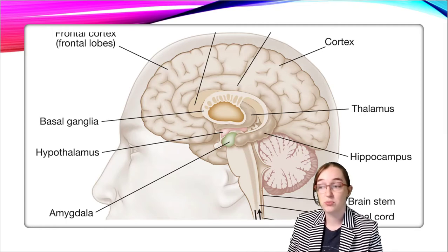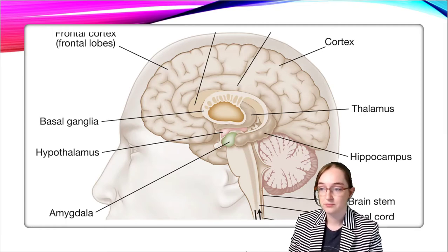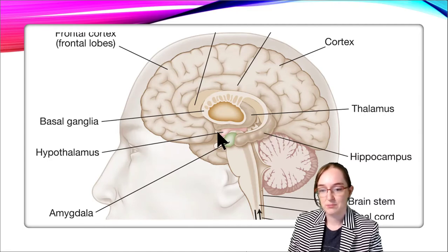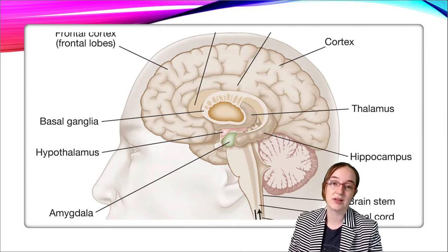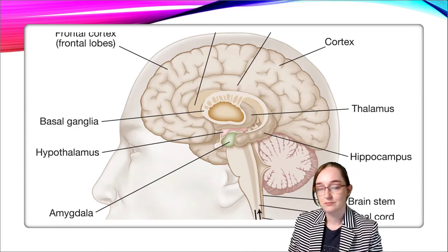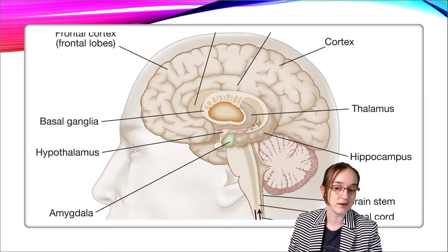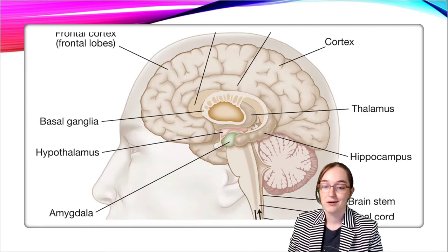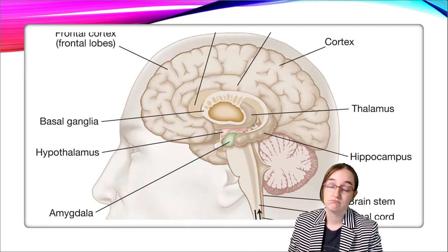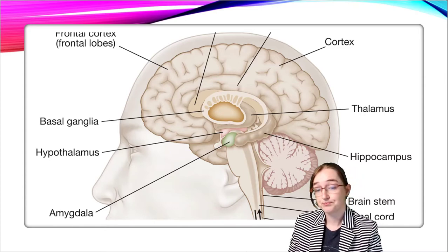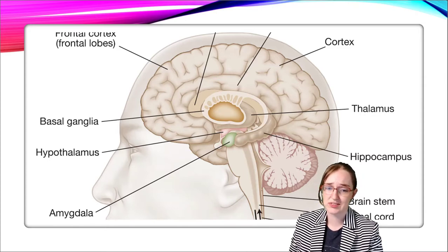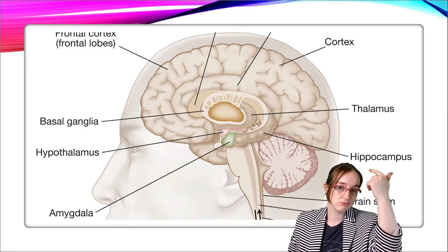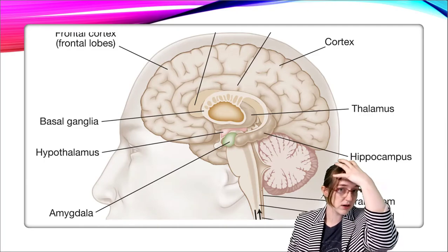The hippocampus is important for processing memories. The cortex is the wrinkly outer part of your brain — all the stuff you see is the outer layer. The neocortex is the outer layer's outer layer; it's the most distinctive part and creates more surface area. Last, the frontal cortex — that large frontal lobe right here.